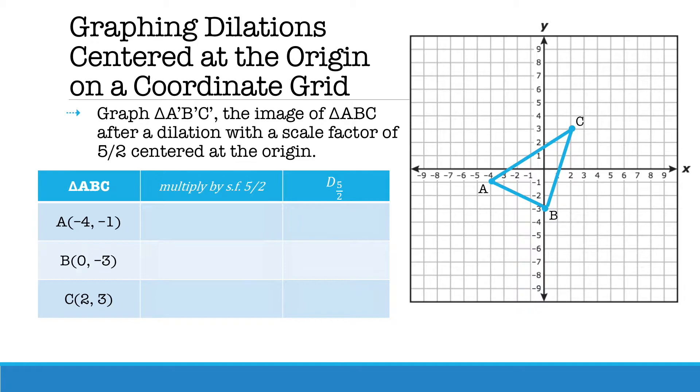Let's take a look at some examples. Here we have a dilation centered at the origin on a coordinate grid. Graph triangle A'B'C', the image of triangle ABC, after a dilation with a scale factor of 5 halves centered at the origin. Because it is centered at the origin, all you do is multiply each coordinate by the scale factor.